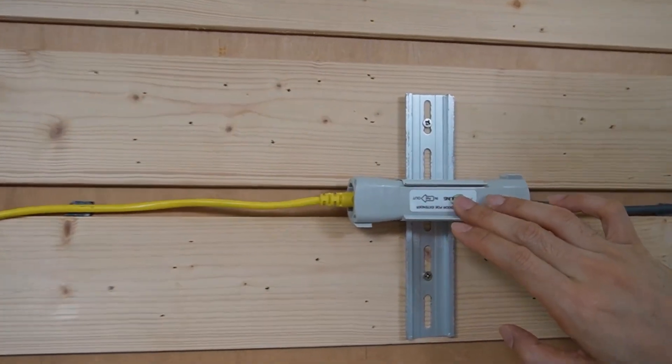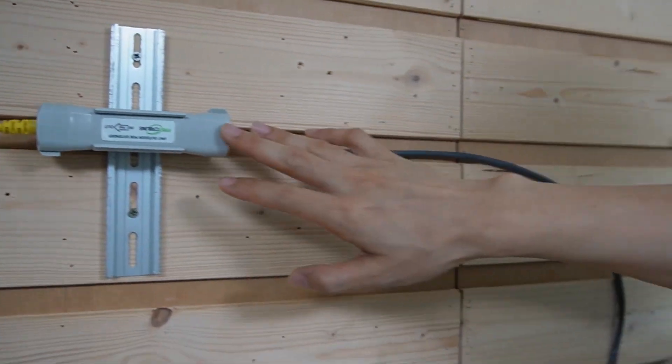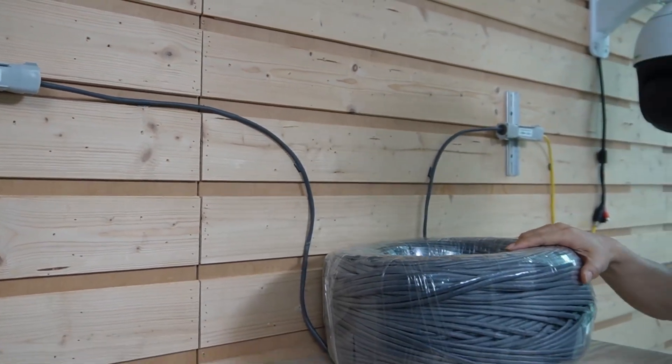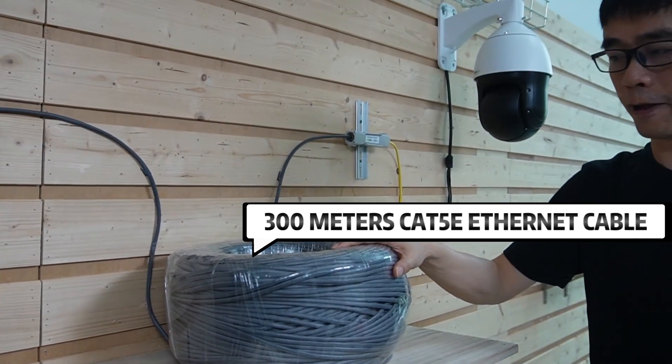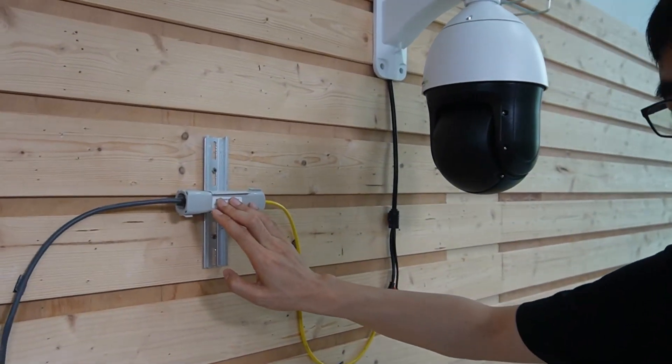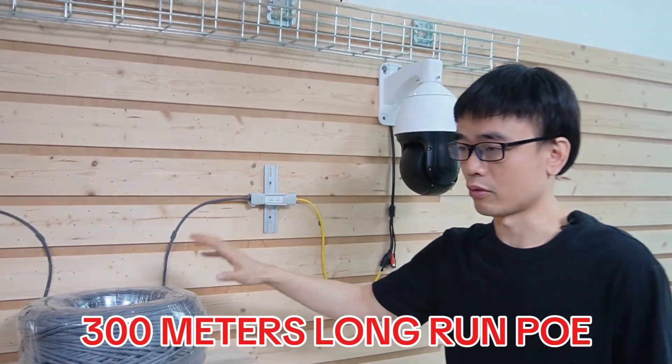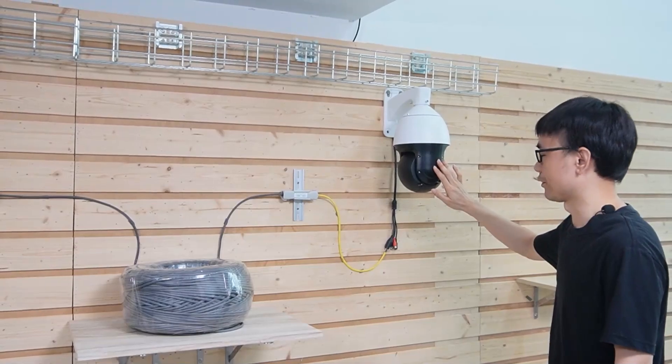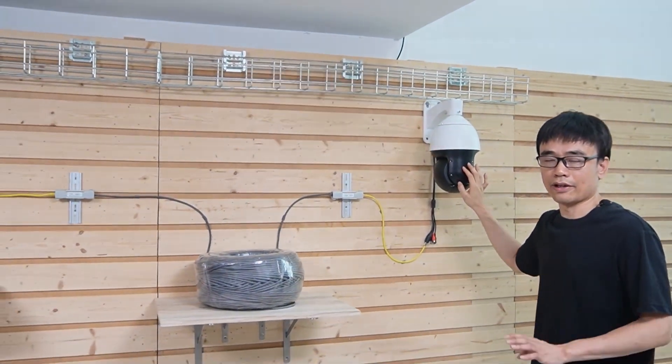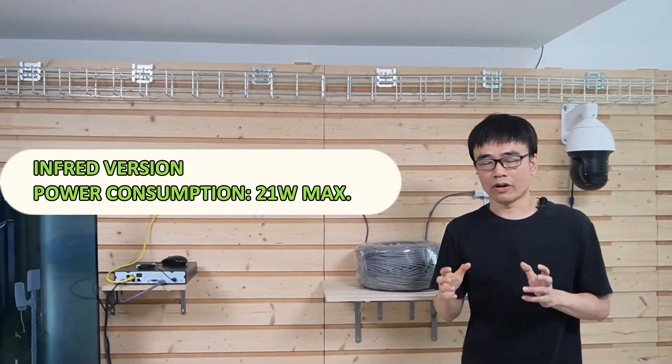Alright, this is the PoE extender. We got one PoE extender next to the PoE NVR, and from the first PoE extender, we have the 300 meters Cat5 Ethernet cable. Here we got another PoE extender next to the camera. Two PoE extenders working together to have the 300 meters long run PoE. And here is the PTZ camera. It's the infrared version. It consumes about 21W maximum.